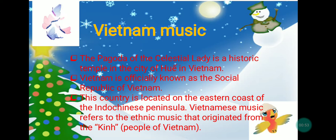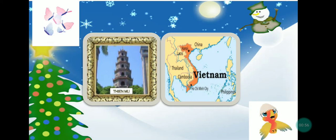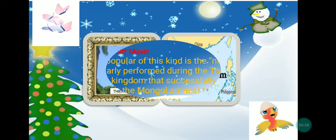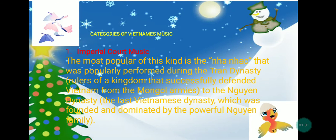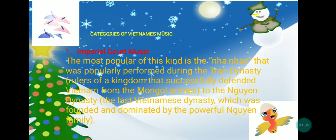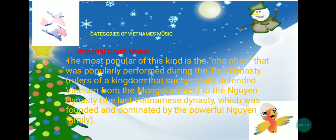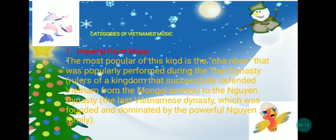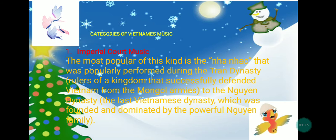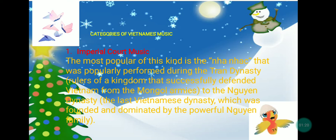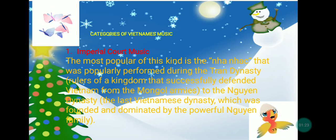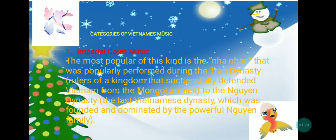Vietnam's music refers to the ethnic music that originated from the Kinh people of Vietnam. There are categories of Vietnamese music. First is imperial court music — the most popular of this kind is the Nha Nhac, popularly performed during the Tran Dynasty through to the Nguyen Dynasty, the last Vietnamese dynasty founded by the powerful Nguyen family.